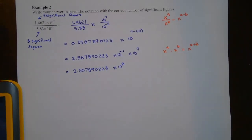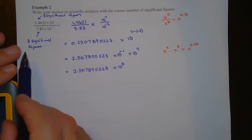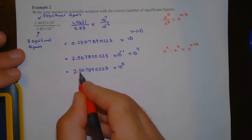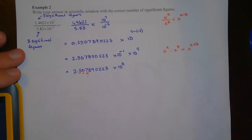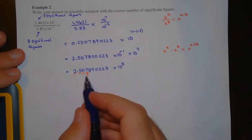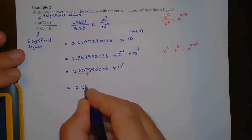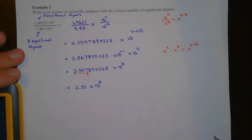Now we apply significant figures. When we multiply or divide, our answer has the same number of significant figures as the number with the fewest — which is three here. Here's one, two, three — I look at the fourth digit to round the third. Since it's a 7 (five or larger), the zero rounds up to 1. The final answer is 2.51 times 10 to the 8th. You'll have homework problems with rounding in scientific notation, multiplication, and division.